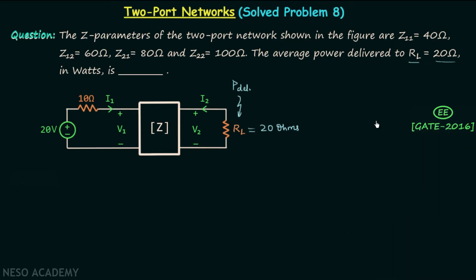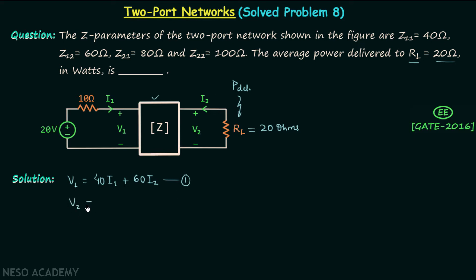I hope you are done and now we will understand the solution. We know the four Z parameters of this two port network and therefore we can write the set of equations. The first equation will be V1 equal to 40 multiplied by the input current I1 plus 60 multiplied by the output current I2. The second equation will be voltage V2 equal to 80 multiplied by I1 plus 100 multiplied by current I2.